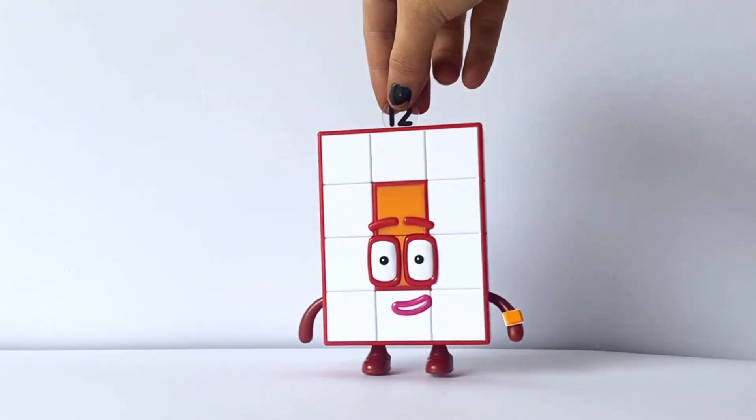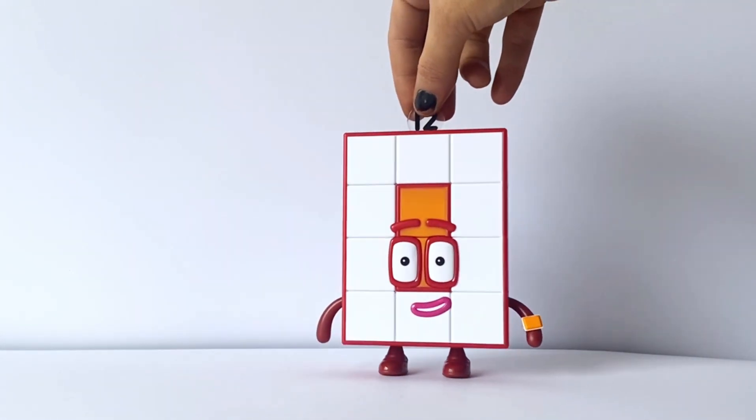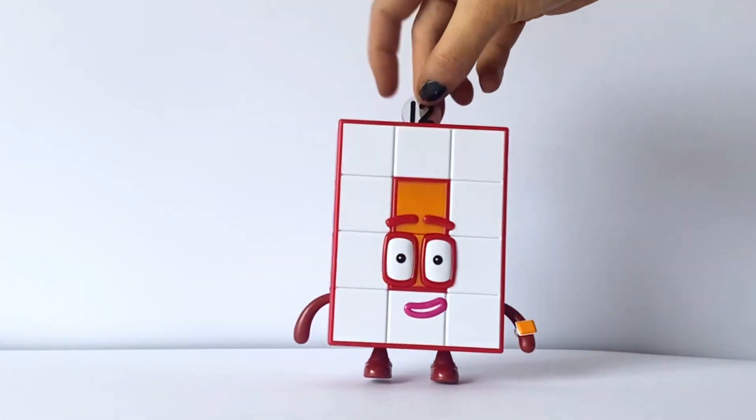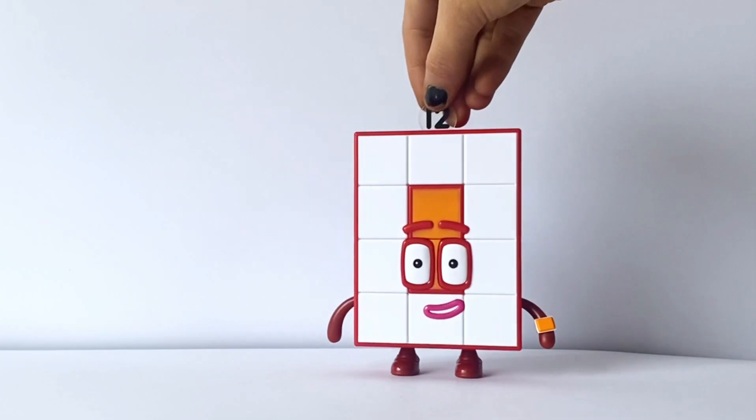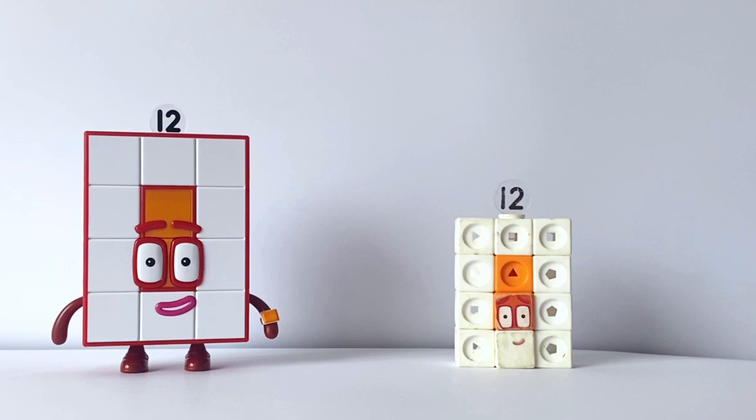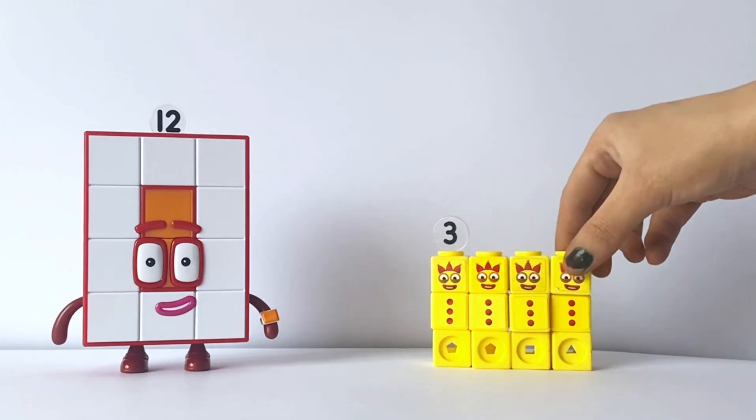Next we have our NumberBlock action figure 12. She is in her 3 by 4 rows. NumberBlock 12 also has opposable arms and on her wrist she has her array display. So 12 can be 3 by 4 or 4 by 3, which is 3 lots of 4.